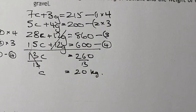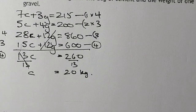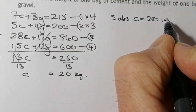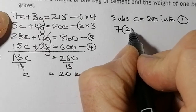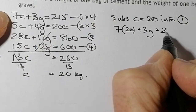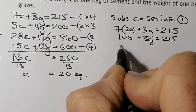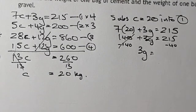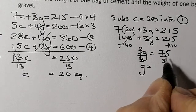Now I'll substitute C equals 20 into equation 1 to find G. So 7 times 20 plus 3G equals 215. That gives me 140 plus 3G equals 215. I'll take 140 away from both sides, leaving 3G equals 75. Dividing each side by 3 gives me G equals 25 kilograms. So one bag of gravel weighs 25 kilograms.